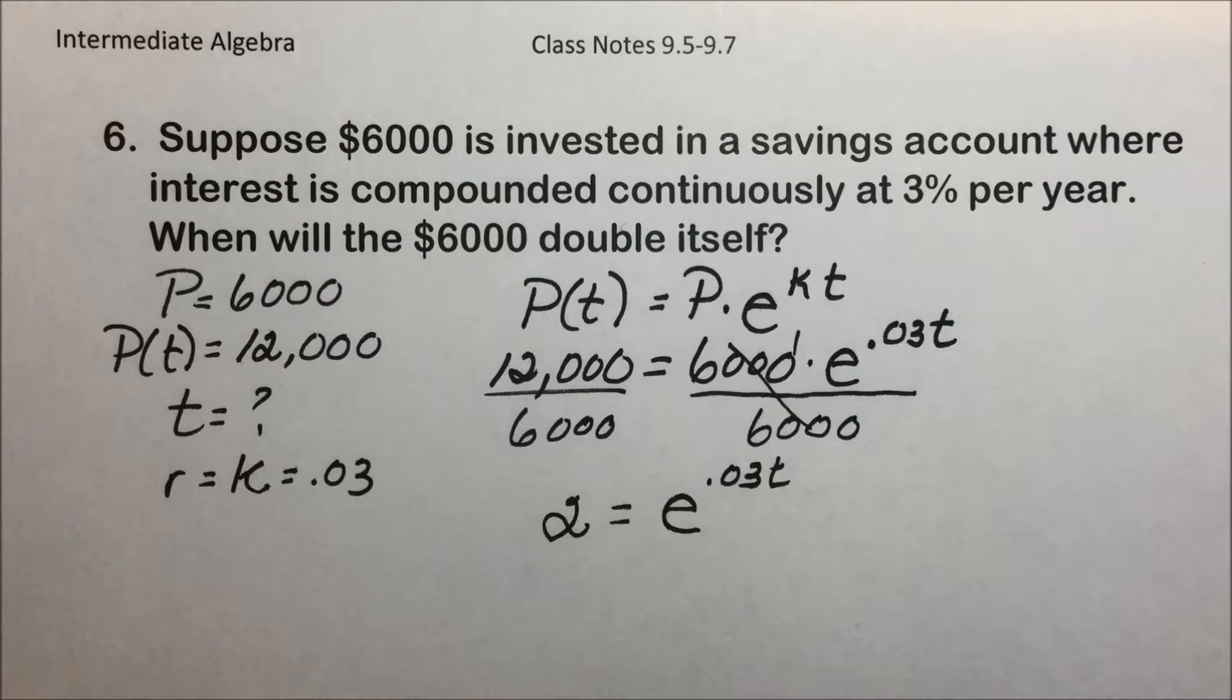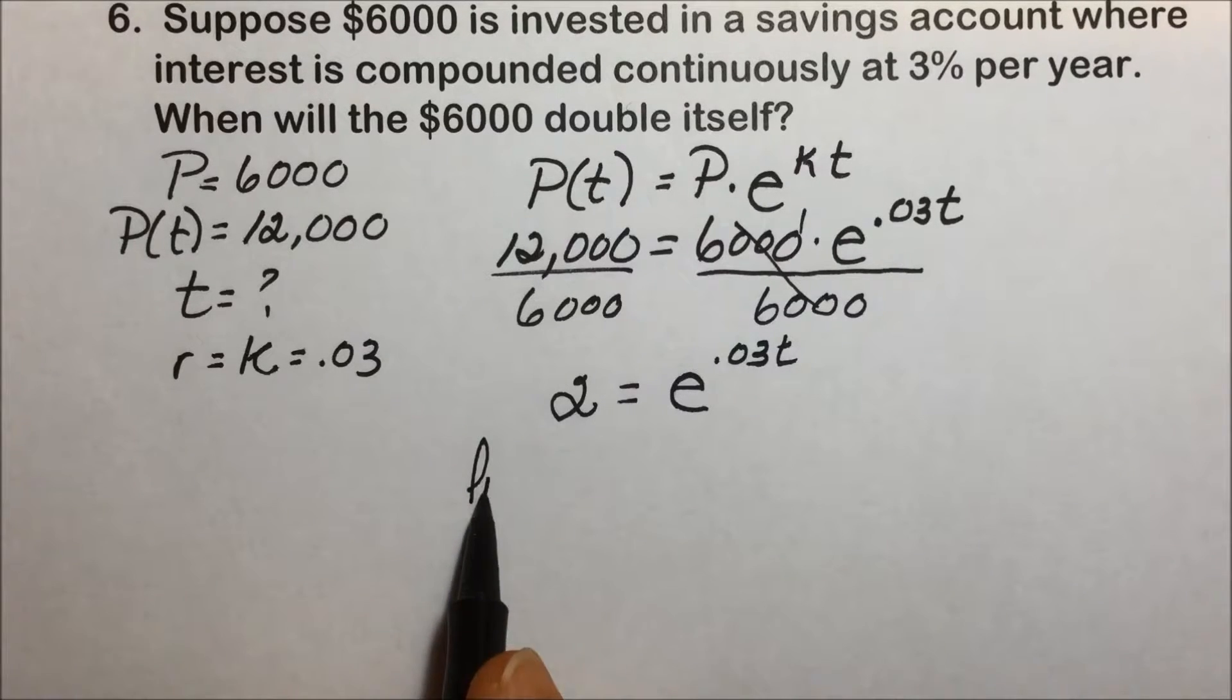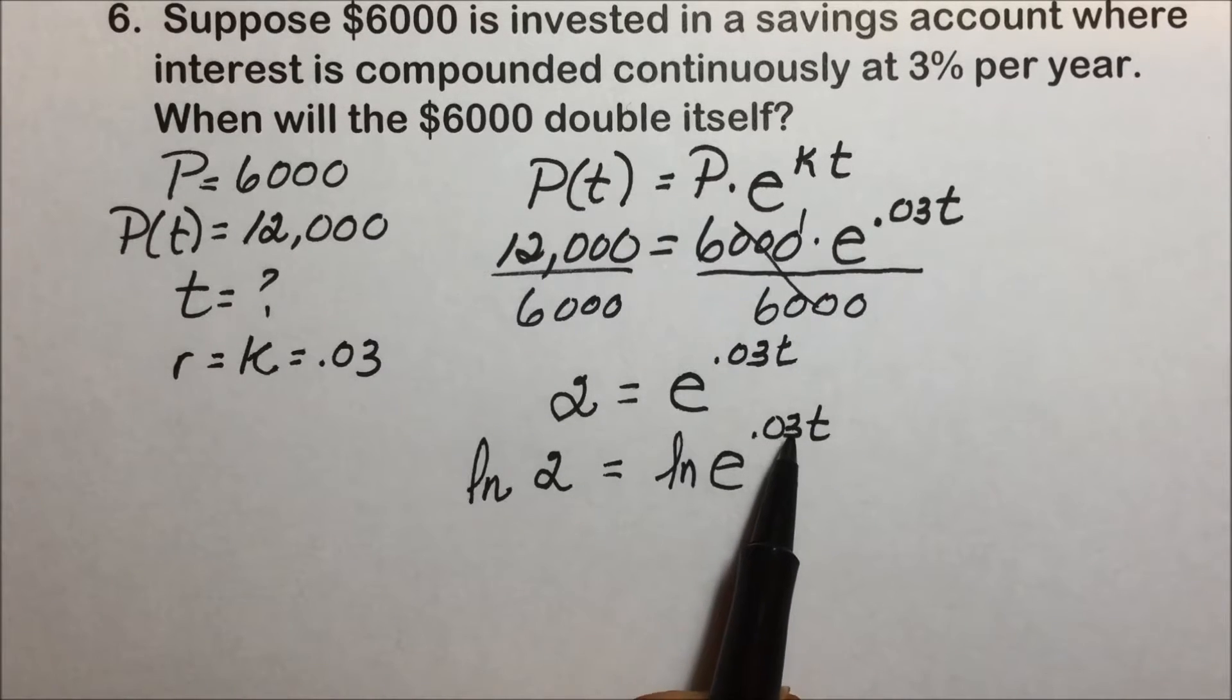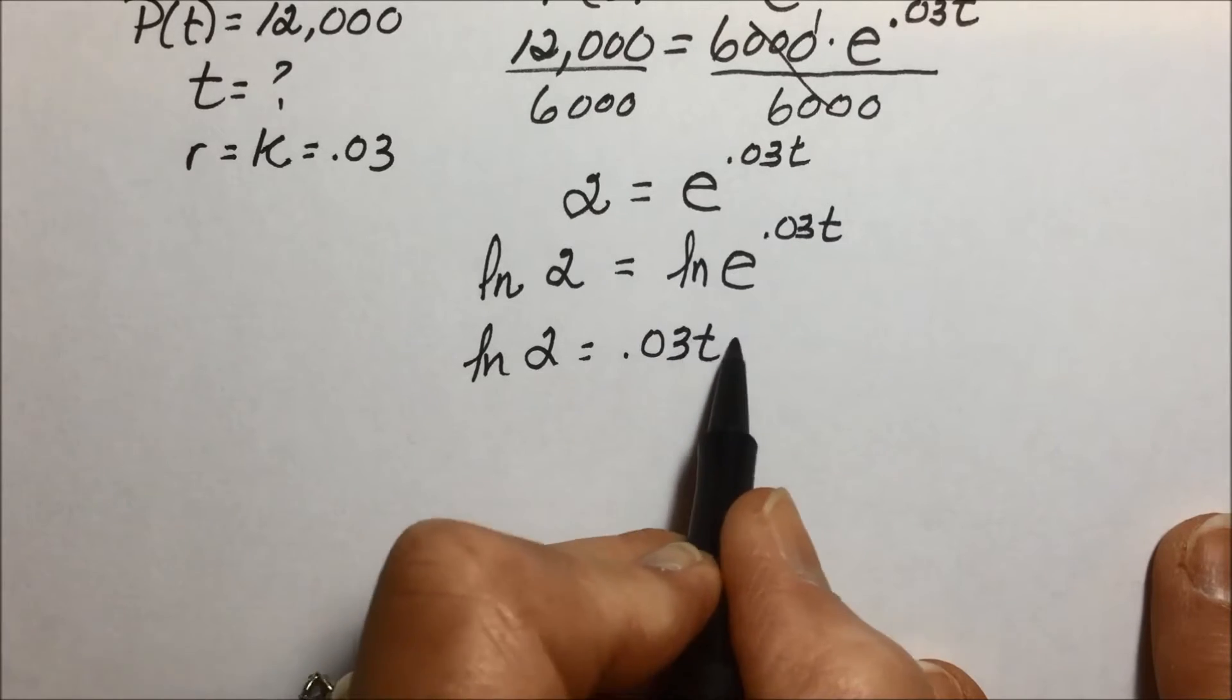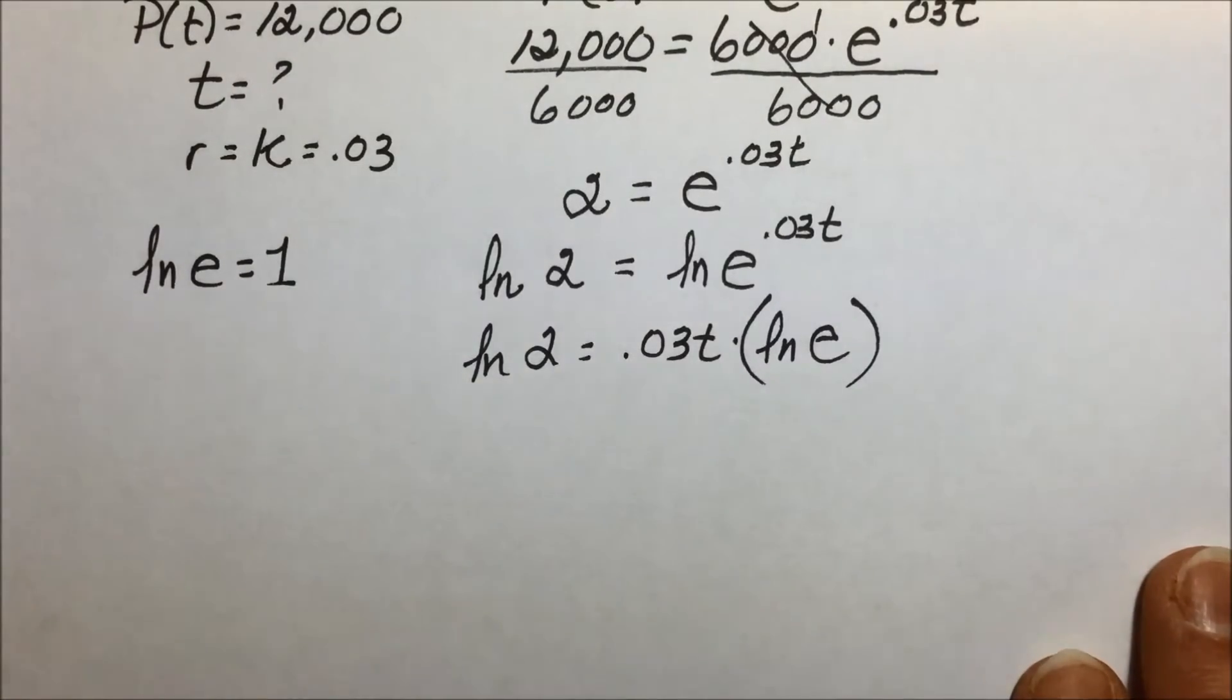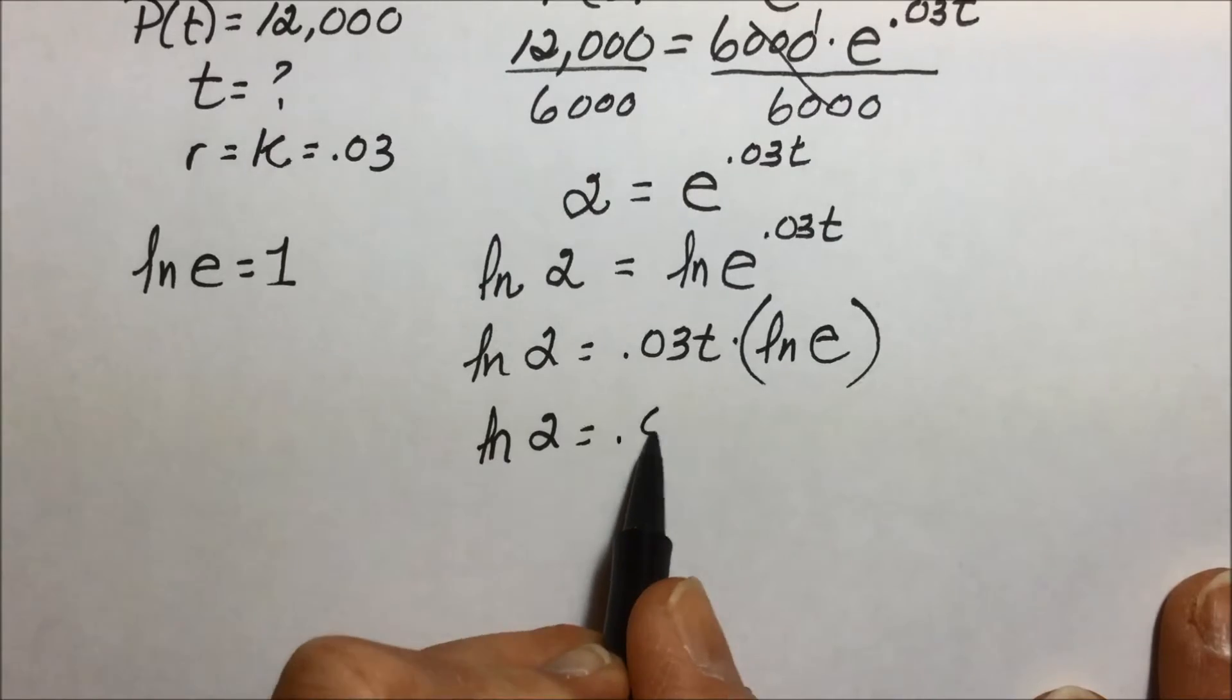To get the variable removed from the exponent, we need to take a logarithm. And in this case, since our base is e, it's best if we choose to take a natural log of each side. It's going to make our calculation much easier, so I'm going to take the natural log of 2 is equal to the natural log of the quantity 0.03t. The log of a quantity with an exponent, that exponent becomes the coefficient. So we have 0.03t times the natural log of e. Earlier when we worked with natural logs, by definition, ln of e is equal to 1. So this term can be replaced with a 1. That leaves us with natural log of 2 is equal to 0.03t.